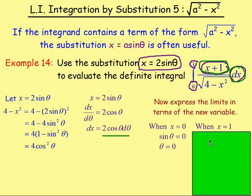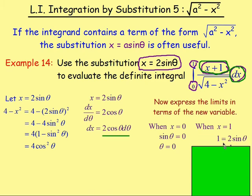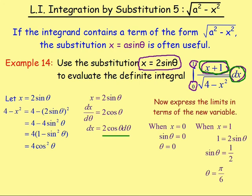For the upper limit, when x equals 1, substituting gives 1 equals 2 sine theta. Dividing both sides by 2 gives sine theta equals one half. Taking the inverse sine gives 30 degrees, but remember in Advanced Higher we use radians, so theta equals π over 6.